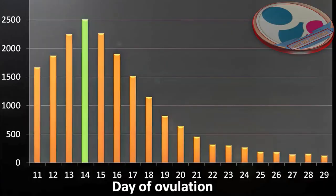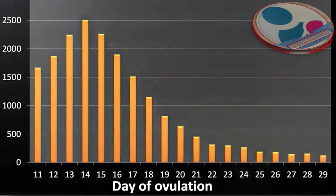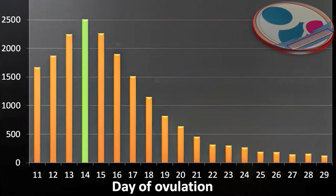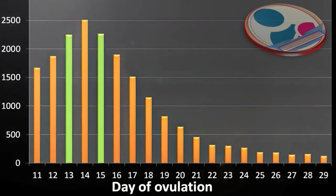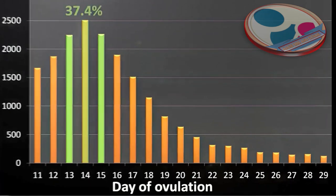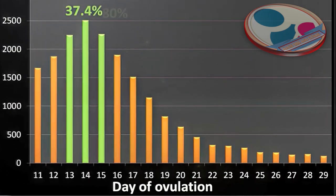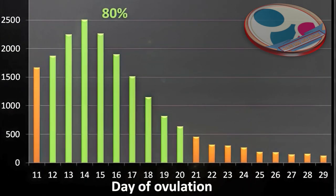Here is the data from that analysis. You can see there was a wide range of variation in the days that people ovulated. Most people ovulated on day 14 compared to any other single day, but about 37 percent ovulated on day 13 or 15, and 80 percent ovulated between day 12 and day 20.